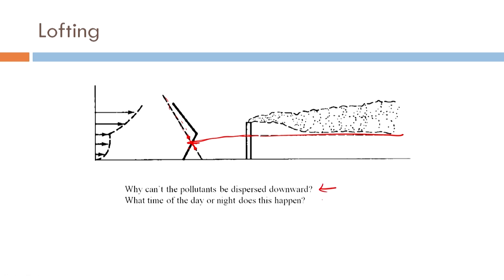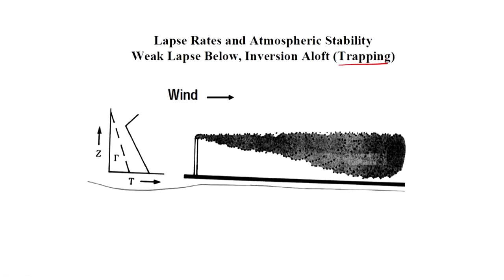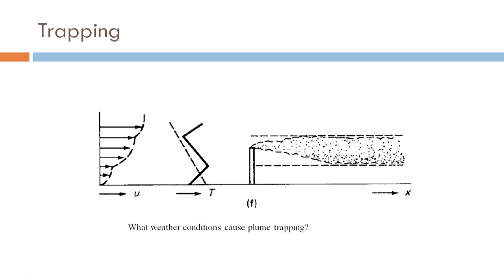These questions are for you to answer: why cannot the pollutants be dispersed down, and what time of day or night does this happen? So, trapping — temperature profiles of the environment like this with inversion above. This can occur during winter, during the period when the sun has just come up for a couple of hours, around 10 a.m., or due to radiation inversion and subsidence inversion. Depending on where you are giving out the pollutant, it is going to be trapped within that layer — that is why it is called trapping.